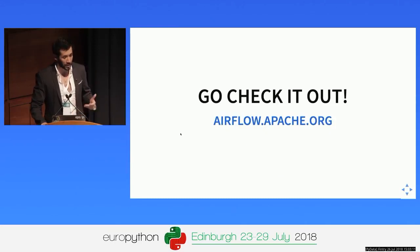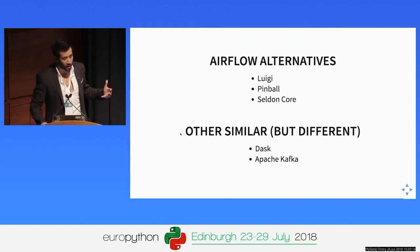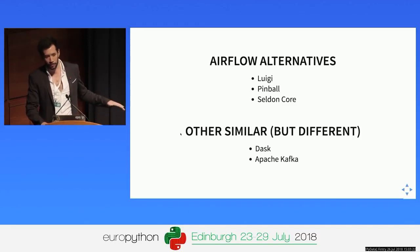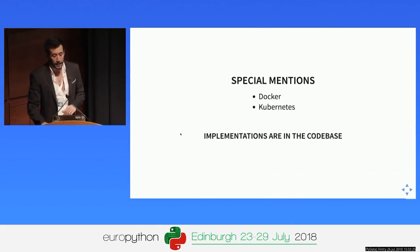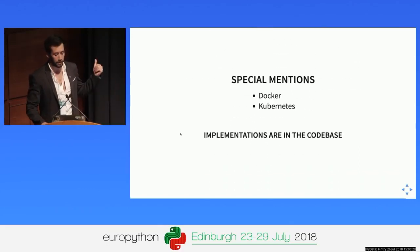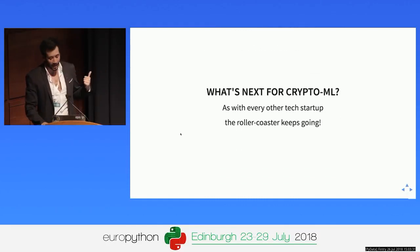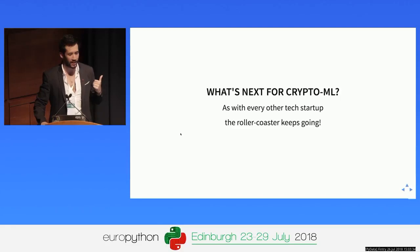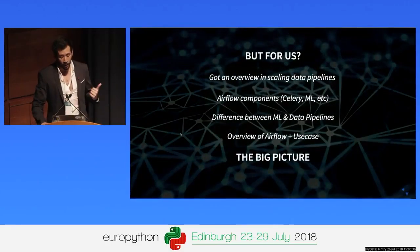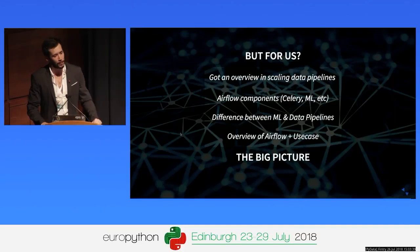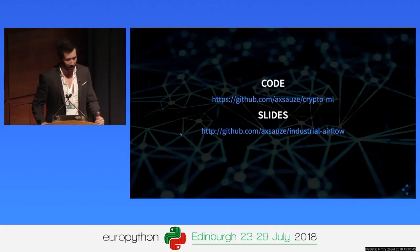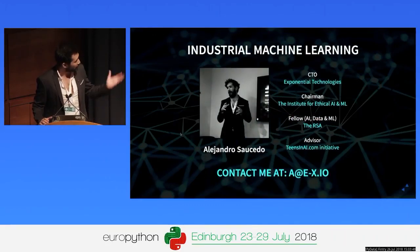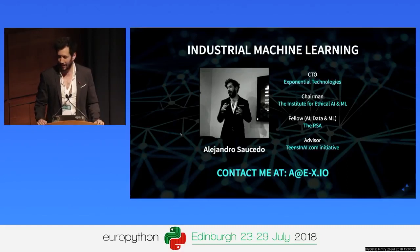Do check out the Apache Airflow project — I recommend starting with the documentation. There are alternatives like Luigi, Pinball, Selden Core, and others that would be used in completely different use cases, like Dask or Apache Kafka. Special mentions include Docker and Kubernetes, which you can find implementations for in the code base. The cryptocurrency guys managed to sort it out — they survived and are probably millionaires now. For us, we got an overview on data pipelines, the difference between machine learning pipelines and data pipelines, and an Airflow overview with use case. Code is in the repo, please feel free to check it out. Thank you very much, I hope that was informative.